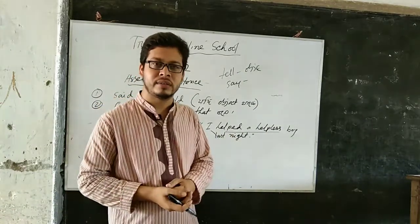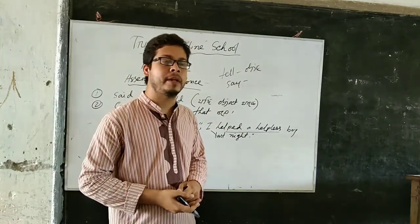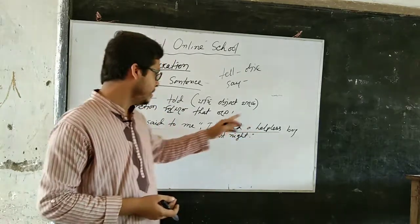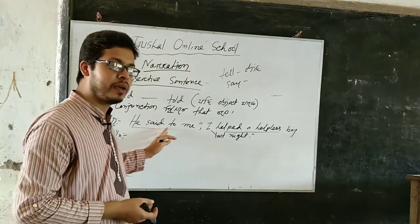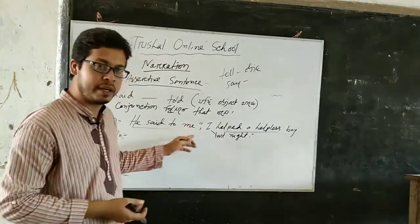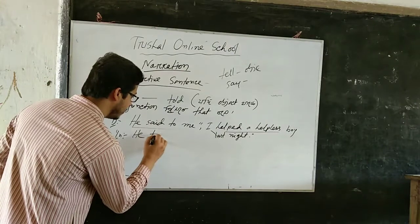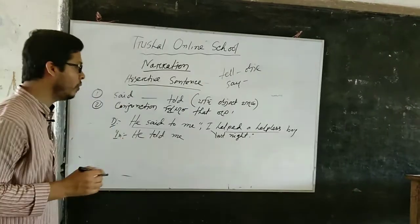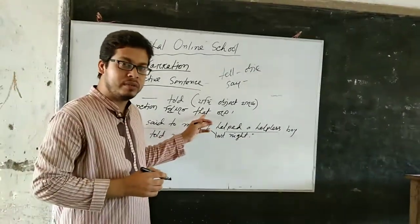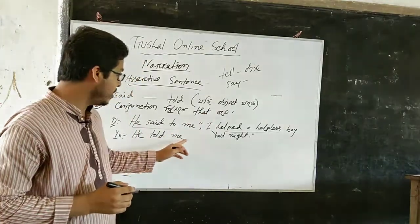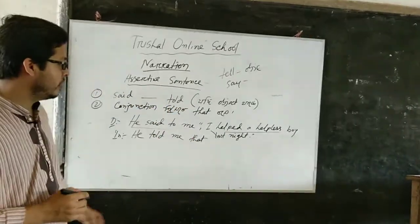This is an assertive sentence, so 'said' is changed to 'told' because there is an object 'me.' So it becomes 'He told me.' In an assertive sentence the conjunction 'that' is used. So: 'He told me that...' Then person change — 'I' is first person, and it goes with the subject of the reporting verb, which is 'he.' So the pronoun becomes 'he.'